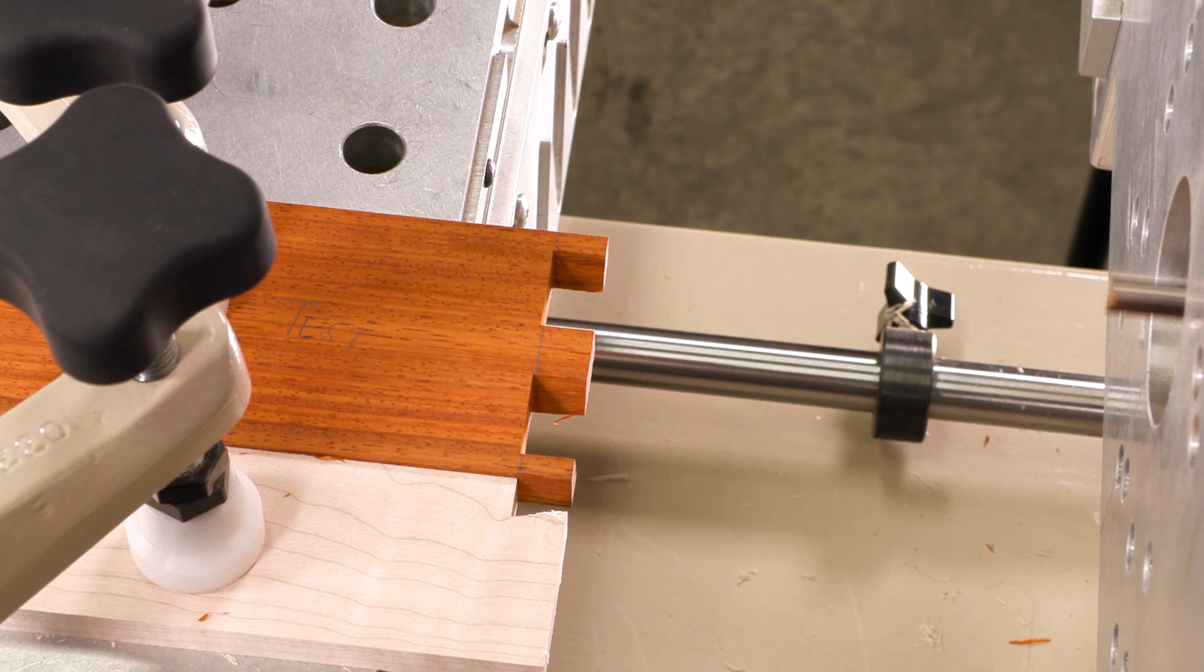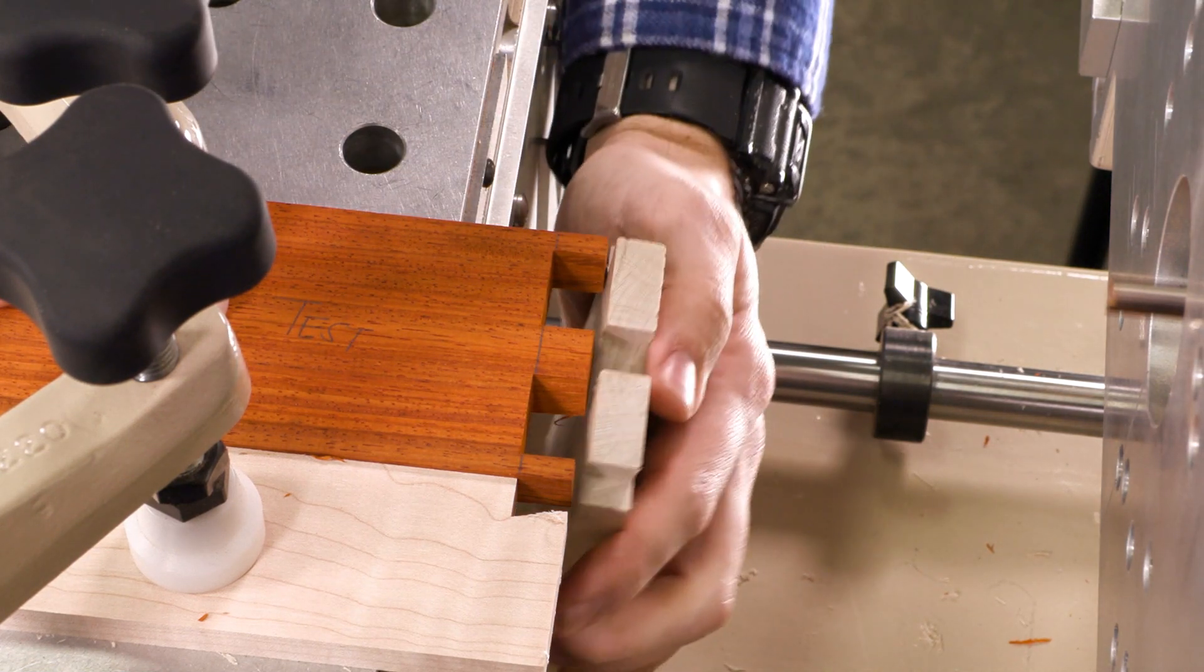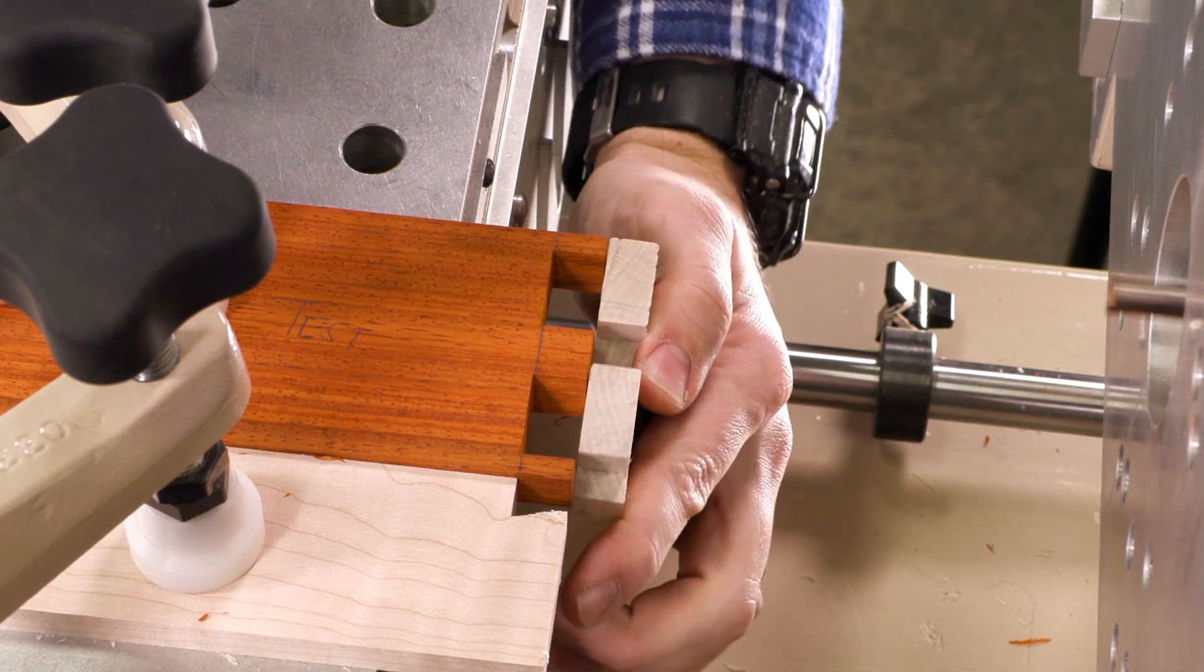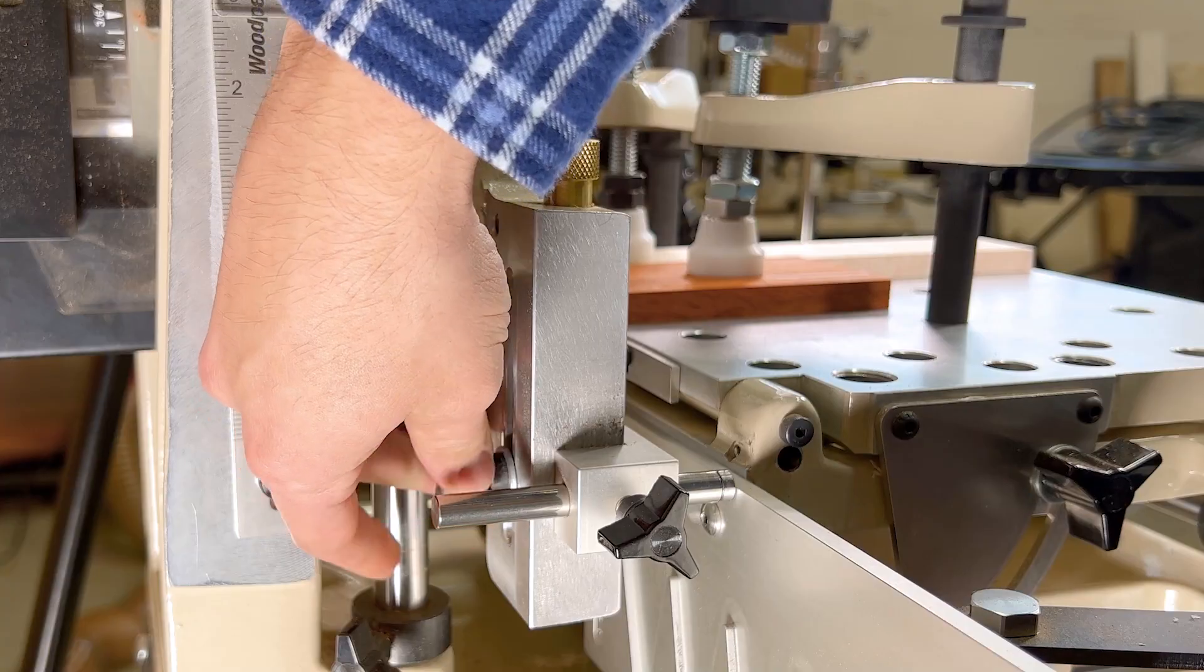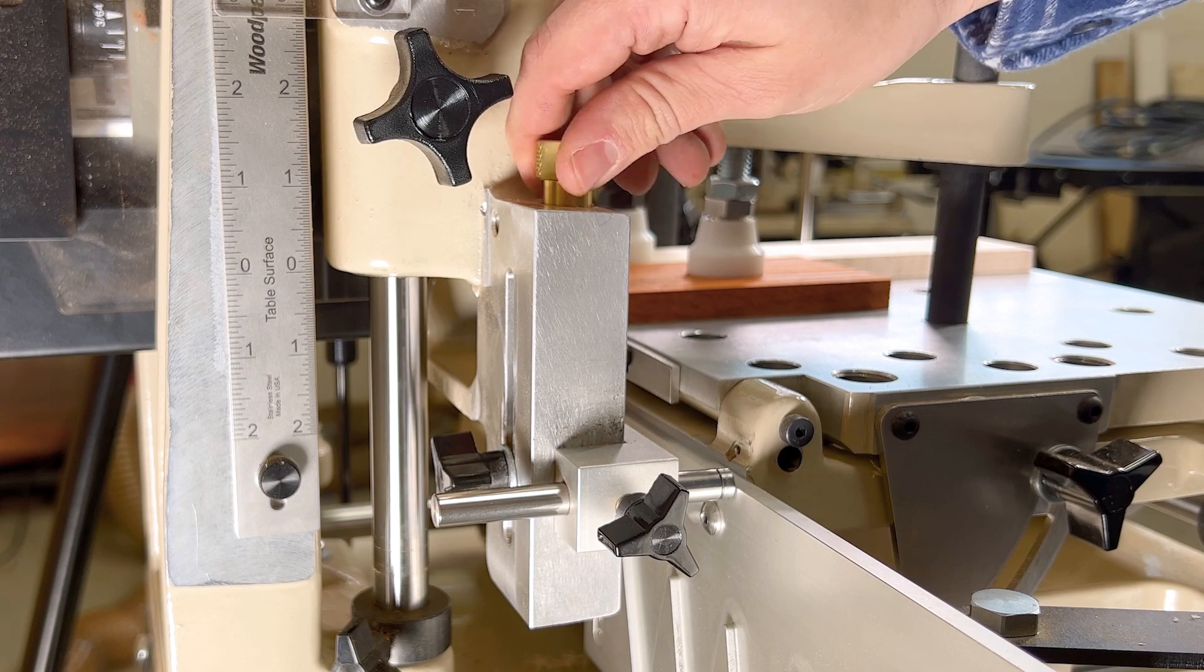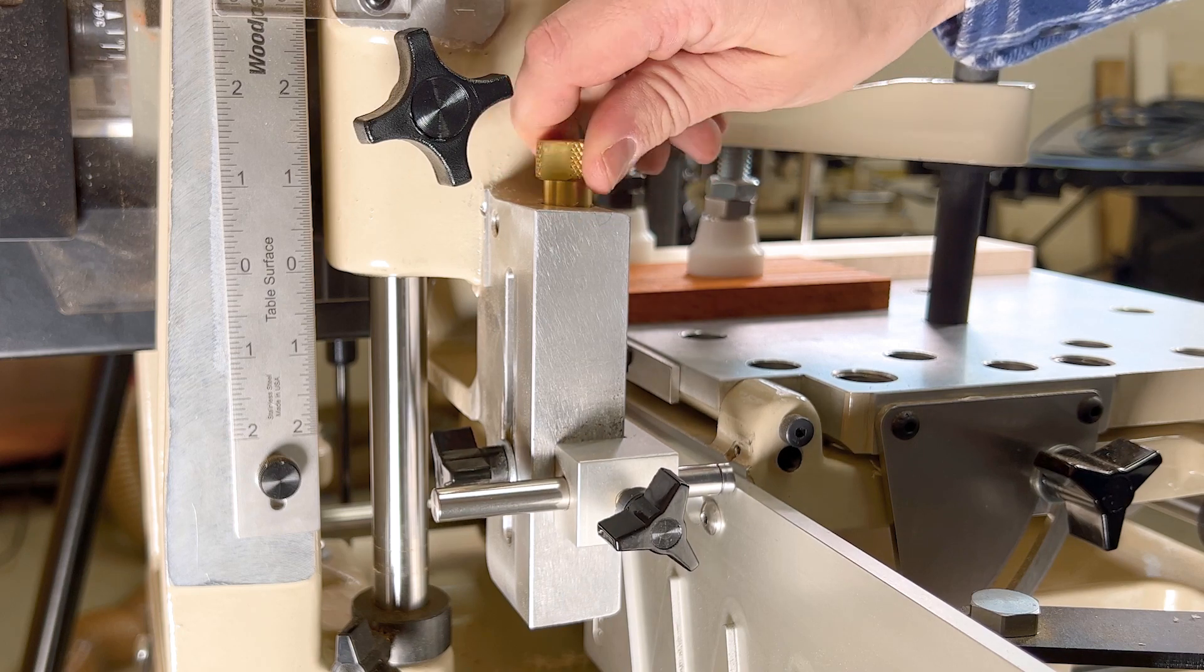After the pins are cut, slide the horizontal table back, leaving your material clamped in place, and use your 5 inch long tailboard to test the fit. If the fit is too tight, rotate the brass knob to the right to raise the position of the stylus pin.